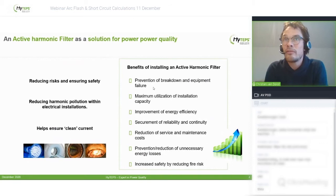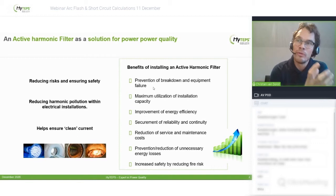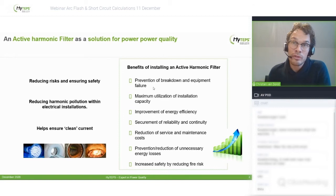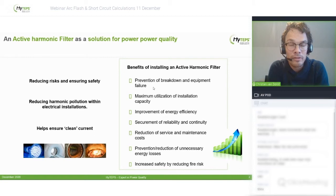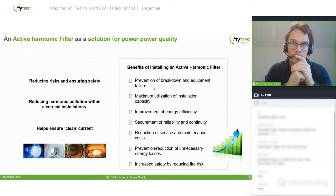An active harmonic filter is a system that continuously measures the quality of the current and compensates the harmonic distortion present, and by compensating the harmonic current it also improves the voltage. Active harmonic filters are a very efficient and flexible tool when you experience harmonic distortion problems. Apart from harmonic distortion, the active filter can also address unbalanced issues — for example, if L1 is loaded with a very high value and L2 and L3 are less loaded, the active filter can balance these currents so the generator can be used more efficiently.